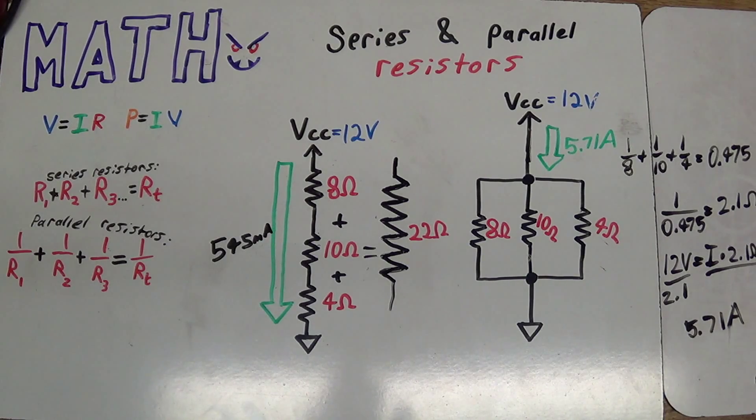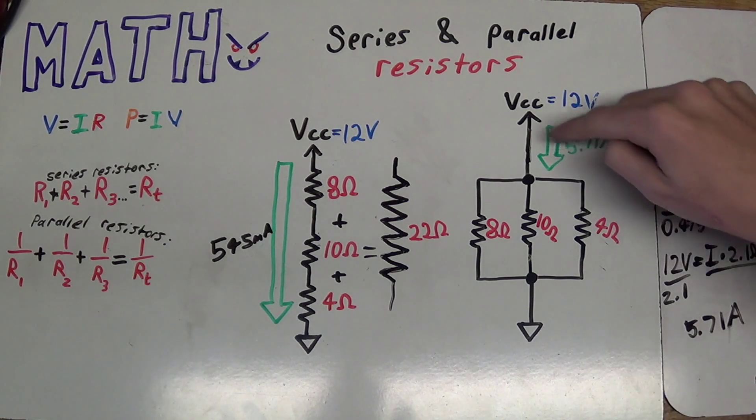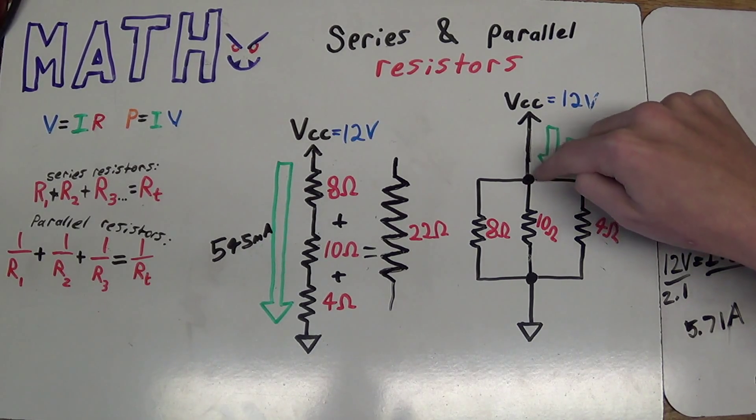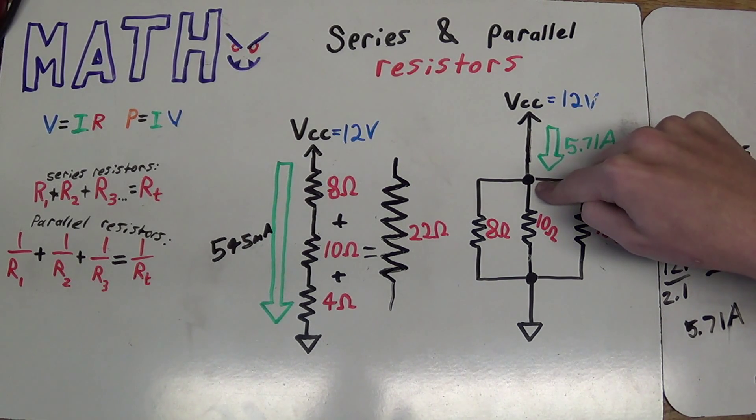However, this only works in certain situations. What if we had a resistor right here? What do you think would happen? The voltage here would no longer be constant, and because the voltage is no longer constant, you can't use that simplification to do the math.